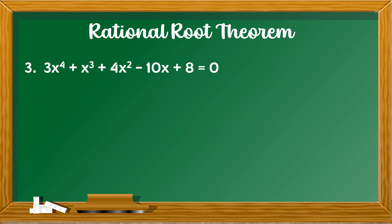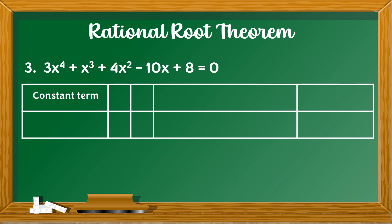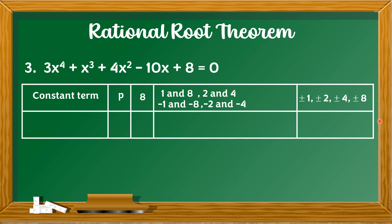For example number 3, we have 3x raised to the 4th plus x cubed plus 4x squared minus 10x plus 8 equals 0. The constant term — value of P — is positive 8. The factors of 8 are 1 and 8, 2 and 4, negative 1 and negative 8, negative 2 and negative 4. We write these as positive/negative 1, positive/negative 2, positive/negative 4, and positive/negative 8.